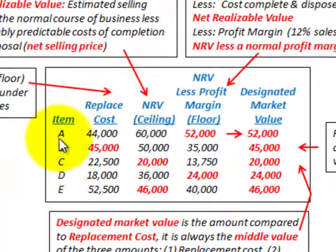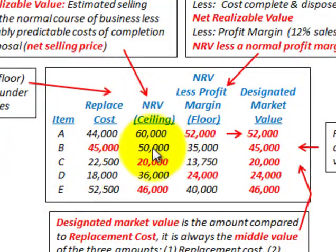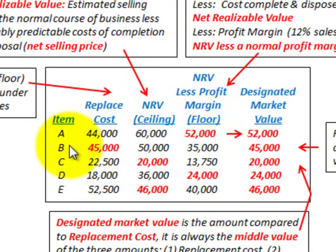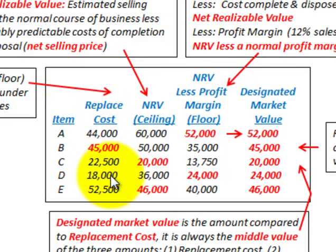We're going to go through an example where we have some inventoried items, and we'll have to determine a number of categories: a ceiling value and a floor value. We're going to first have to determine a designated market value before we can apply this rule. We've got our items A through E, and the replacement cost is whatever cost it takes to replace these items. We also need to determine the ceiling and floor amounts.